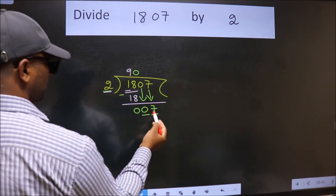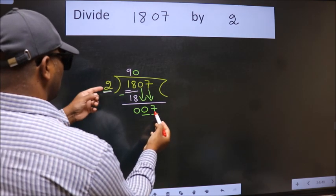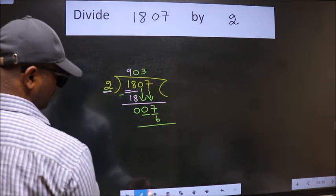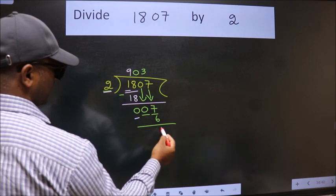So 7. A number close to 7 in 2 table is 2 times 3 is 6. Now we subtract. We get 1.